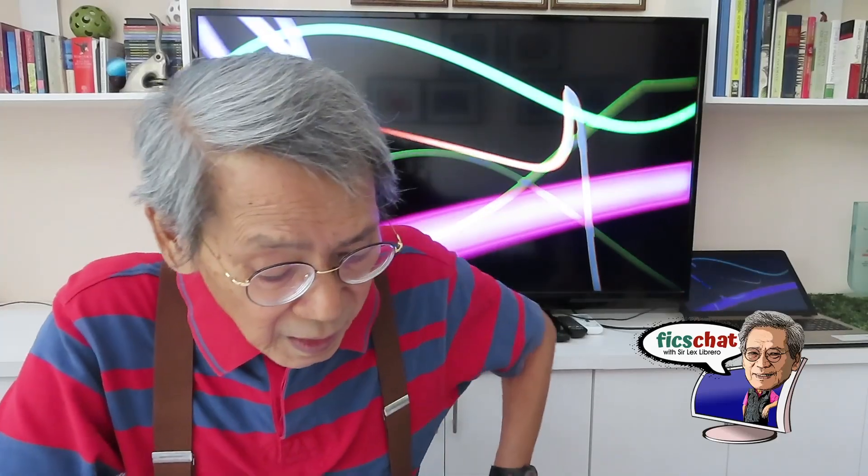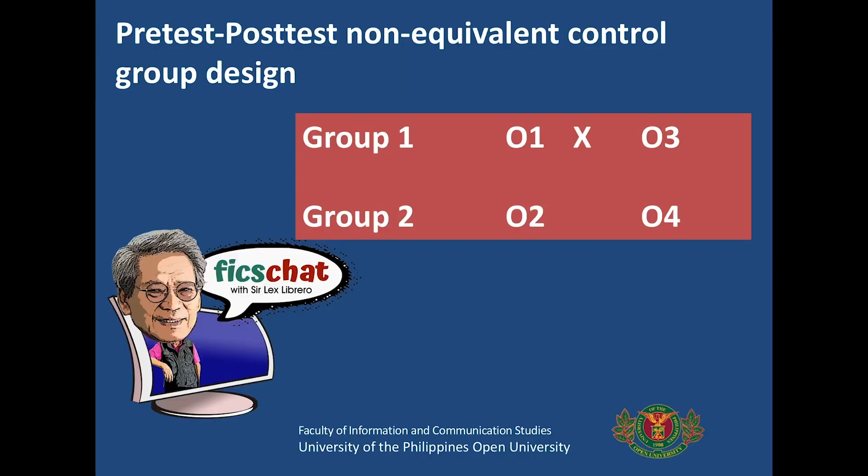We have another one: the pre-test, post-test, non-equivalent control groups. You have Group One, which has an experimental treatment, and Group Two, which is the control group without experimental treatment. In Group One, you make your first observation, introduce your treatment, then do your next observation. In Group Two, you make your first observation, let it pass until the treatment in Group One is finished, then conduct your next observation. Those are the quantitative research designs.